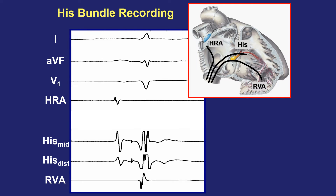Let's analyze a simple multi-channel recording. At the top are three surface ECG leads; below is a high right atrial catheter with a signal timing near the sinus node; then a quadrupolar His catheter showing mid and distal pairs with atrial, His, and ventricular signals; and at the bottom a right ventricular apex catheter with a ventricular electrogram timing with the surface QRS.